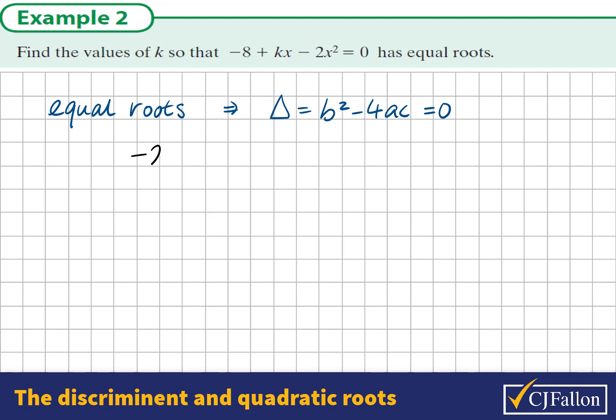So we'll write this as a statement first. If the discriminant equals 0, we could work out the discriminant of this quadratic. Now, normally we write the quadratic with the x² part first.